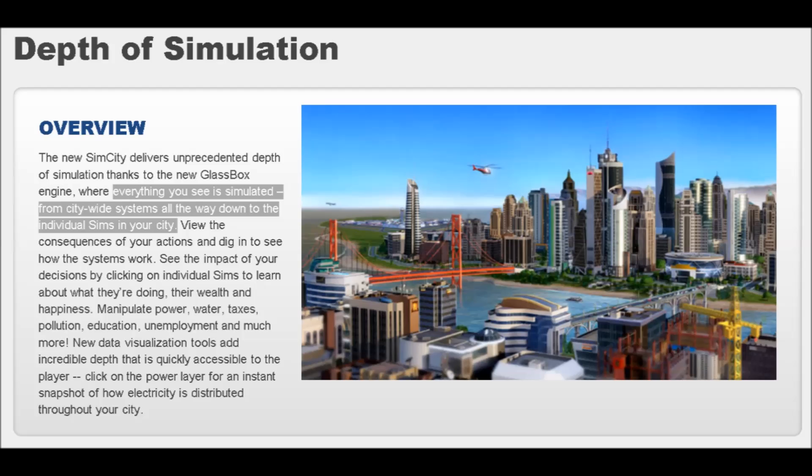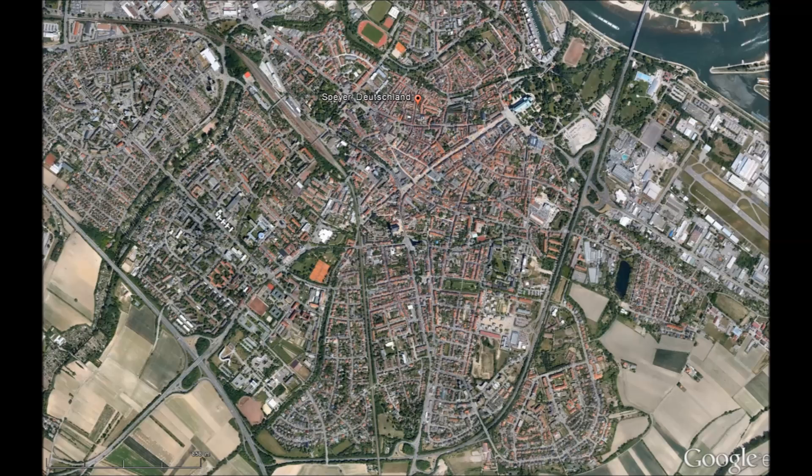The promise of SimCity 5 is to simulate everything you see down to single sims using the AVN system. So, like in the real world, the traffic on the road is the product of sims going to work, grocery shopping, or whatever people drive around for.